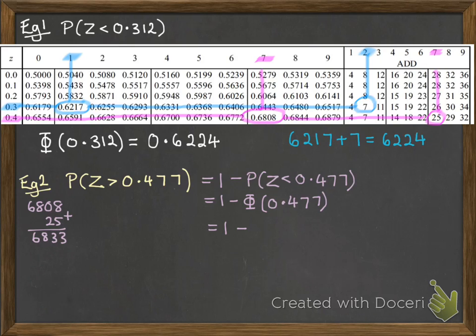So add on that 25 to that first value of 6808, and we get 6833. So that's going to be 0.6833. Take it away from 1, 0.3167. Okay, next one.